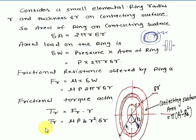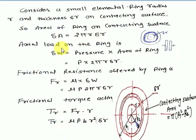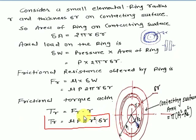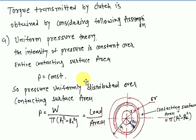To summarize the equation chain: T = f × r, then f = μ × δW, then δW = p × area, and area = 2πr·δr. So working from bottom to top, or top to bottom, we derive the complete equation for torque T.